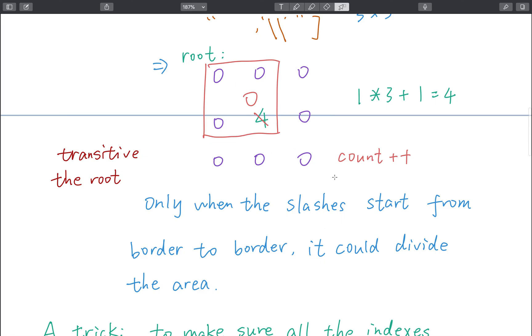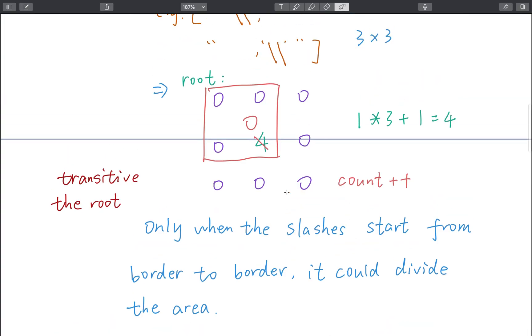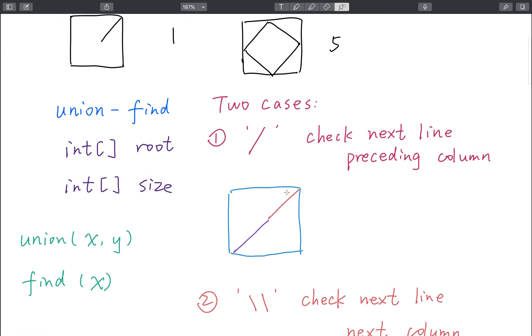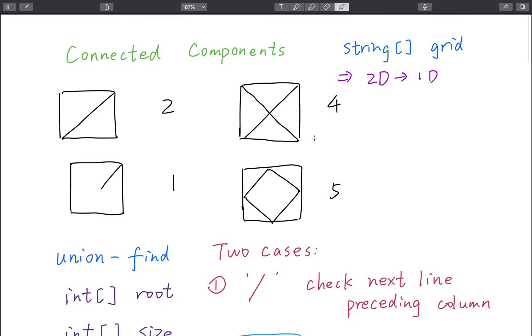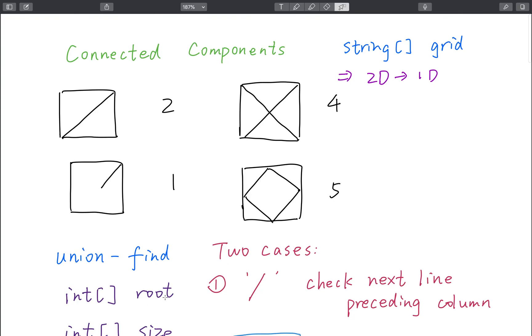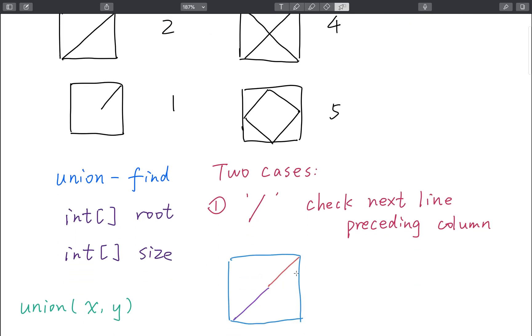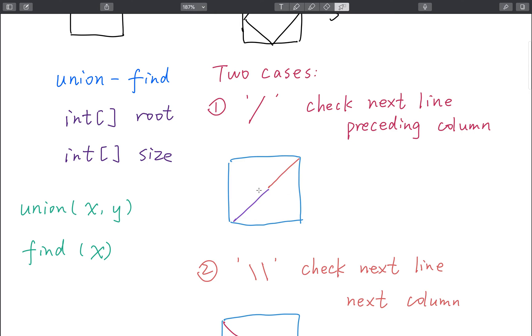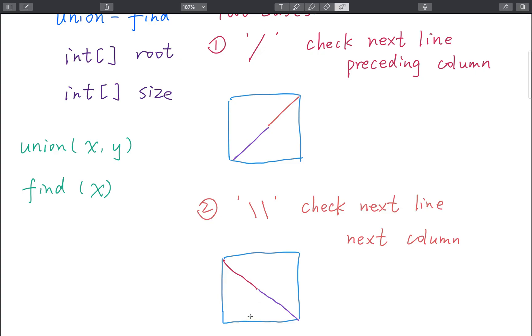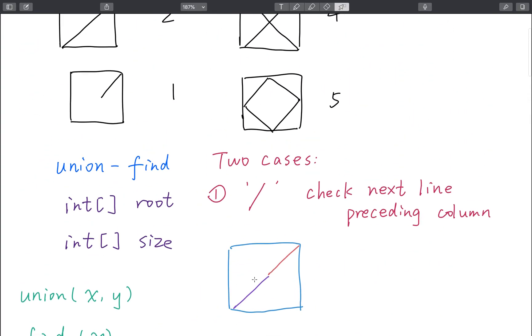Only when the slashes start from border to border it could divide the area. This is the whole idea. So we just need to modify the classic union-find algorithm, use the root to a different size, and check the character cell by cell. If we meet a slash or backslash, we check the next connected part to see whether it has the same root. In the end we just return the disjoint set count.